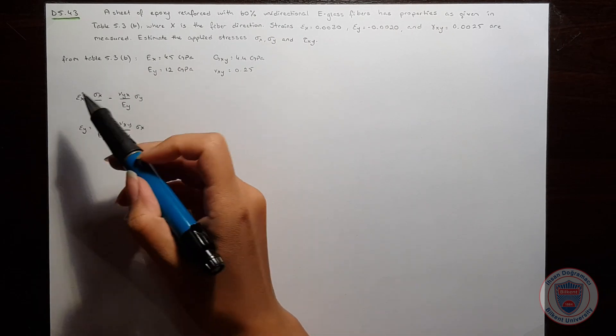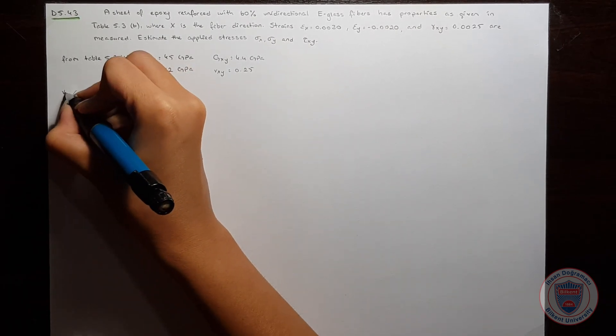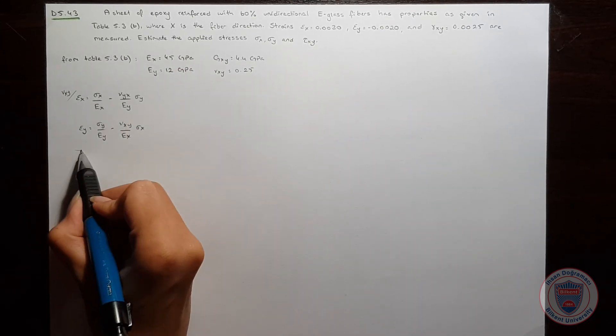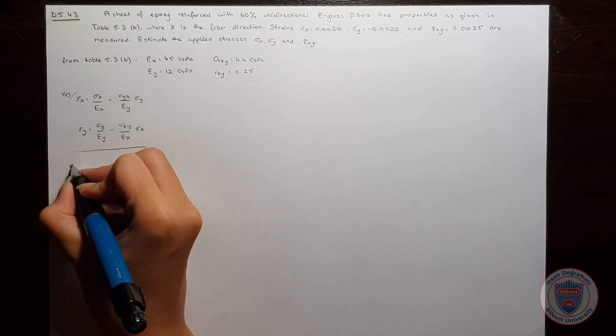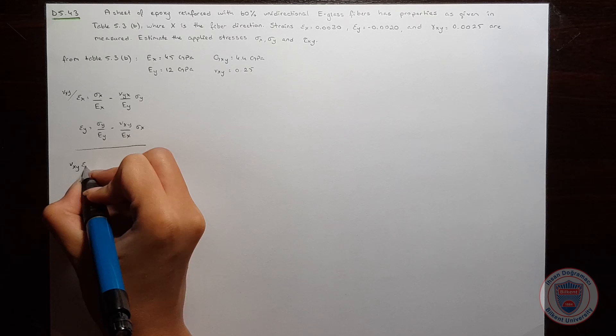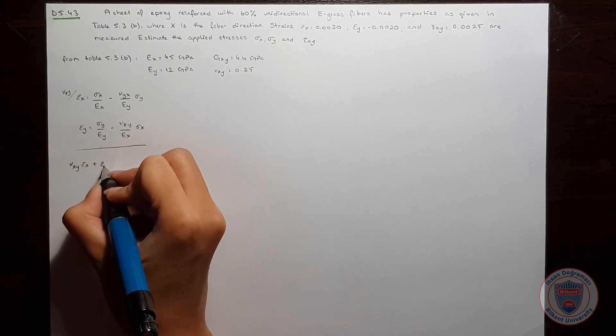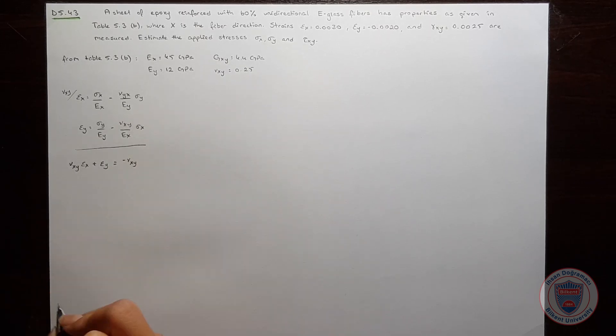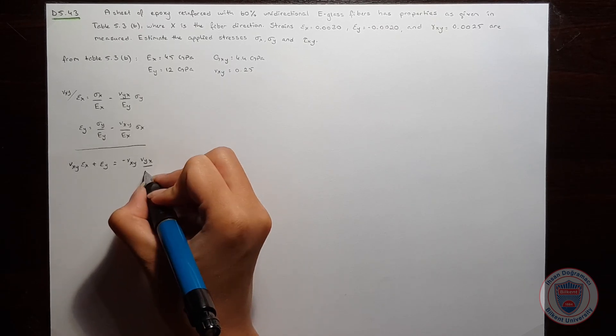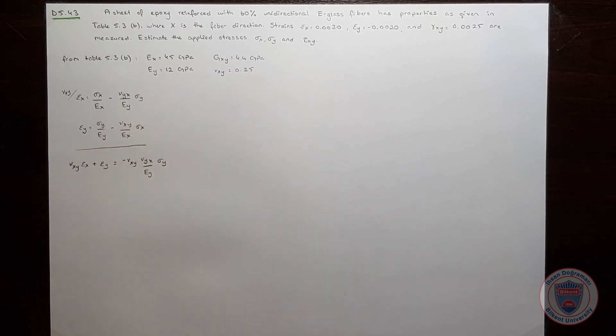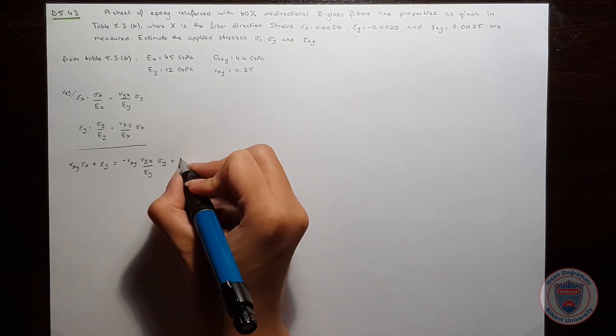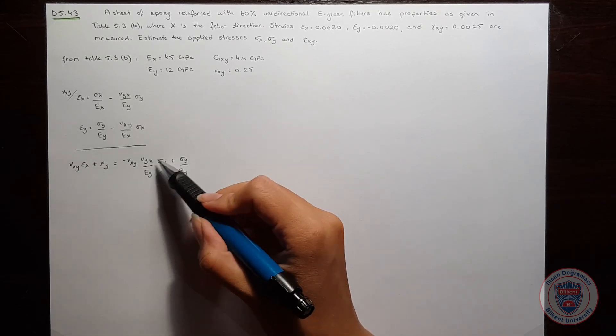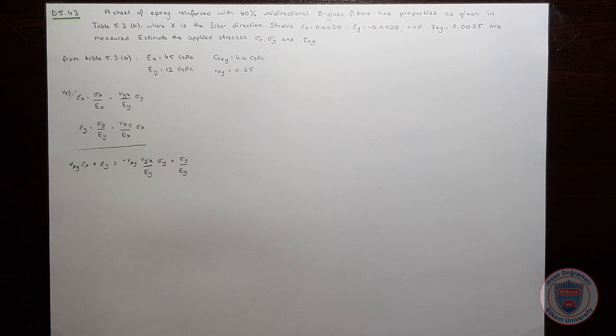Now, I will multiply the first part with νxy and add the two equations together. And we will obtain νxy times εx plus εy is equal to minus νxy times νyx over EY times σy. Now, we will leave σy alone so that we can compute it easily.